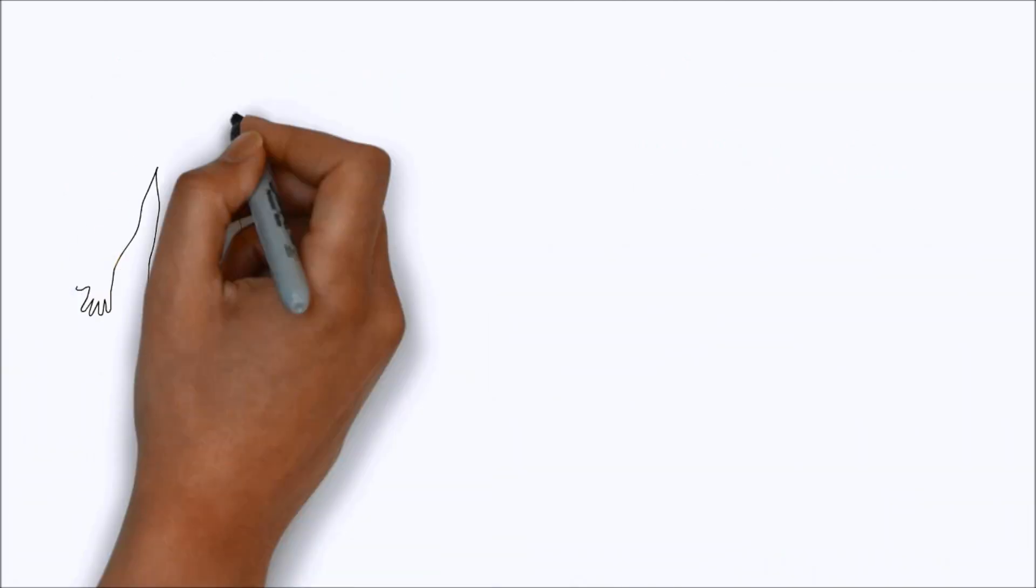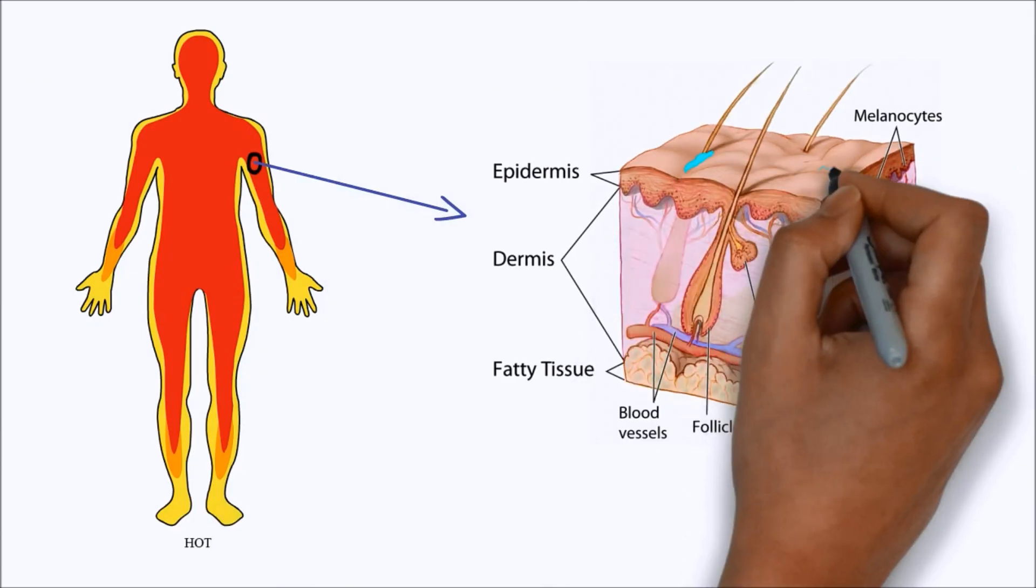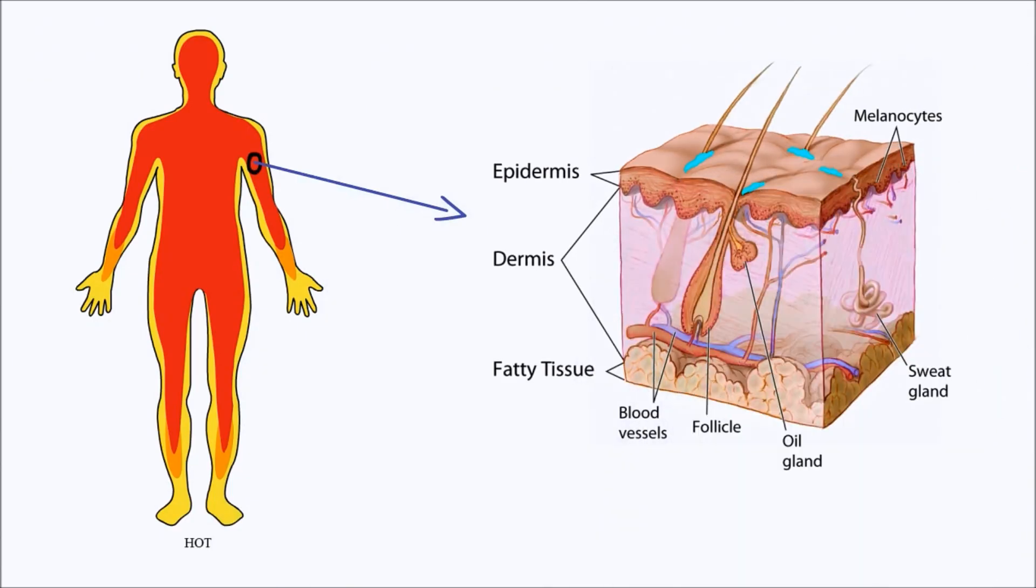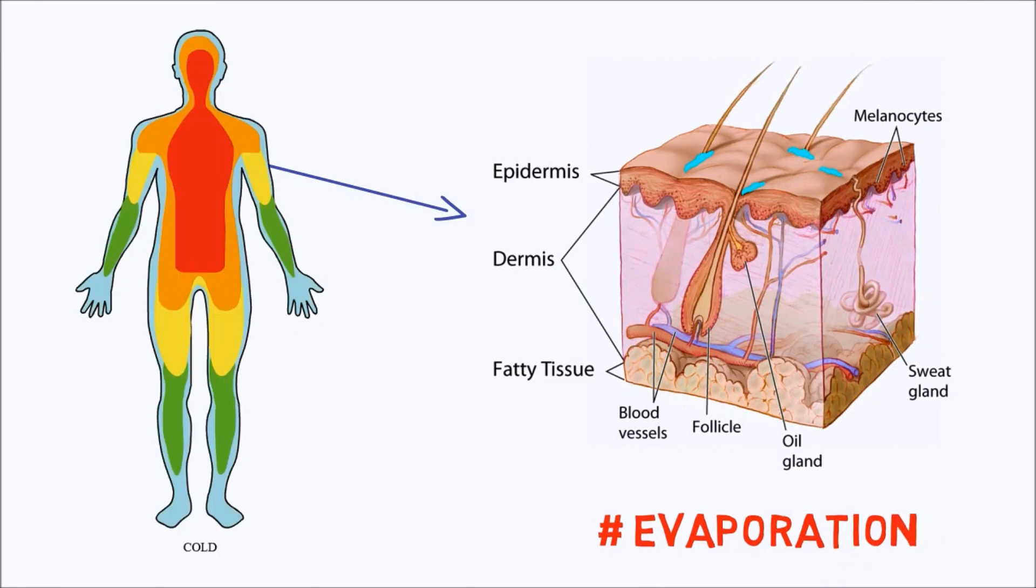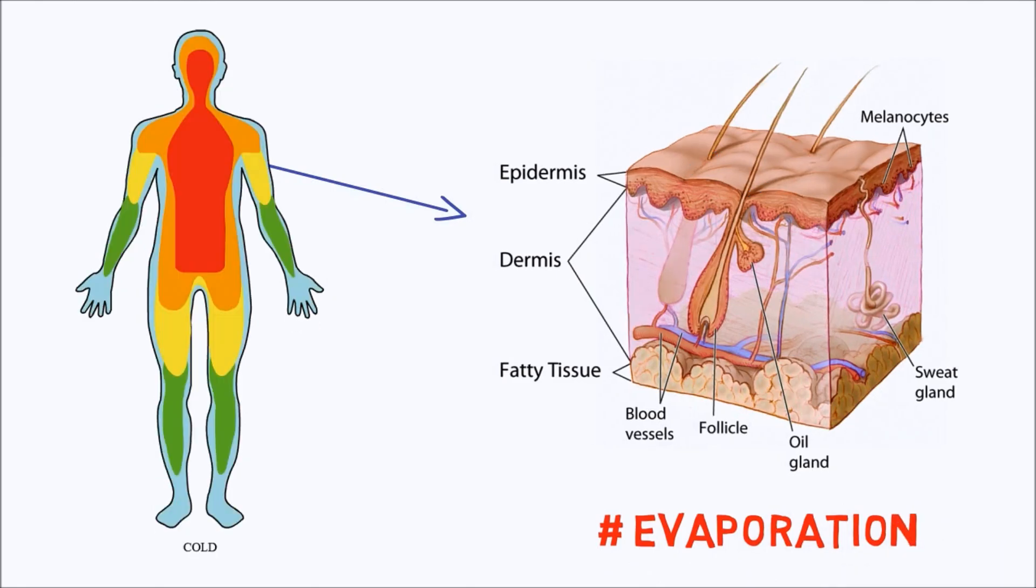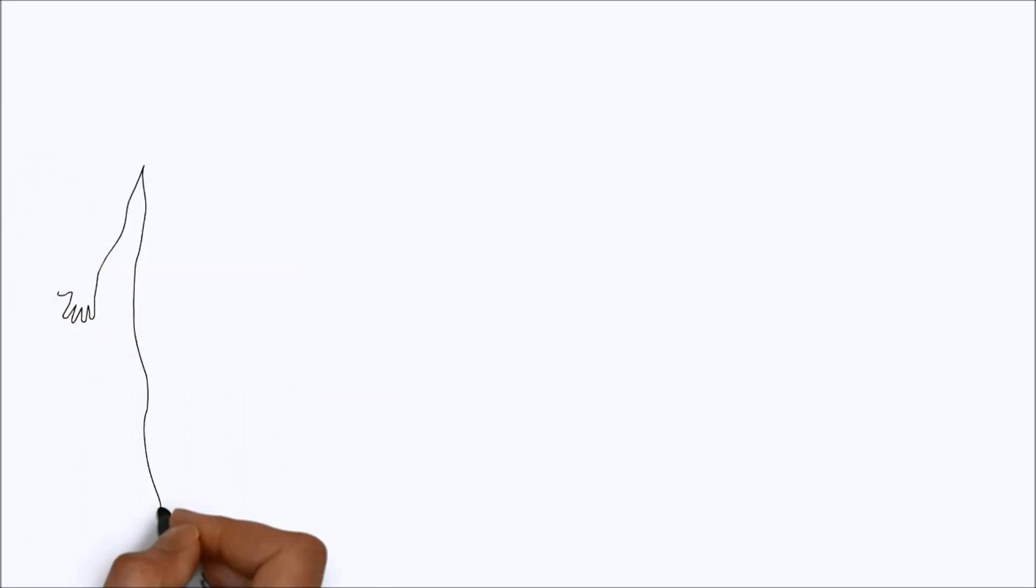Second, if the body is too hot, glands in the skin secrete sweat onto the surface to increase heat loss by evaporation. This cools the body. Sweat secretion slows when the body temperature returns to normal.